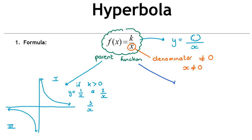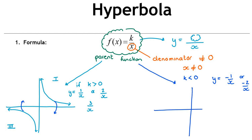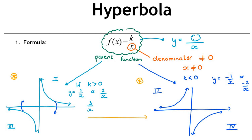The other parent function shape occurs when k is negative — for example, negative 1 over x or negative 2 over x. When you change the sign of a function, it reflects it over the x-axis. This parent function has branches in quadrant 2 and quadrant 4. These are not truly different shapes — the second is simply a reflection of the first over the x-axis.